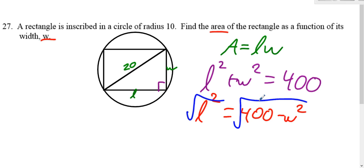And substitute that square root in for L. We get area equals L, which is the square root of 400 minus W squared, times W.